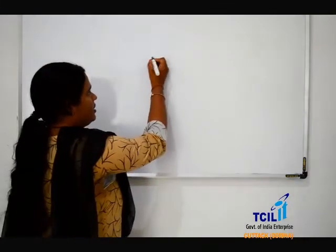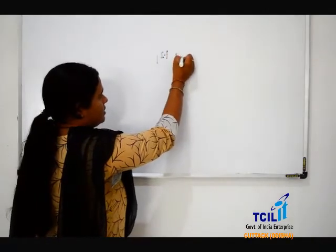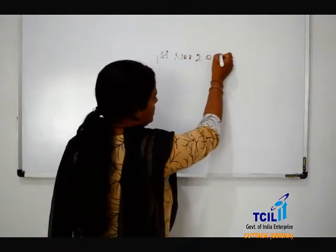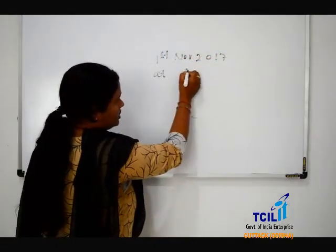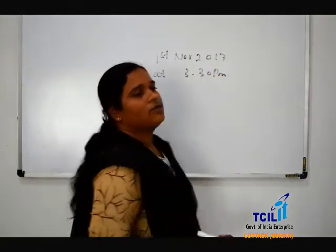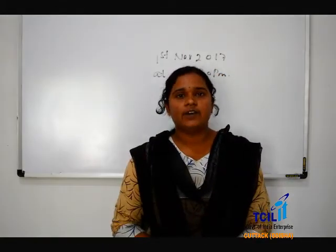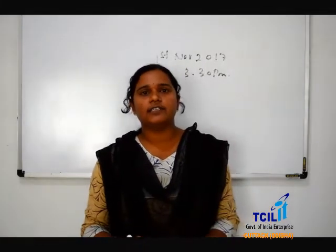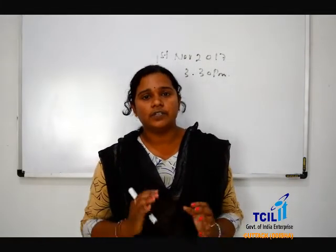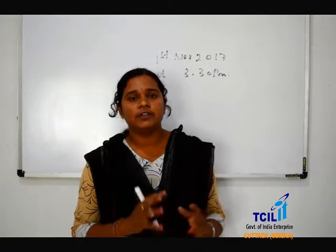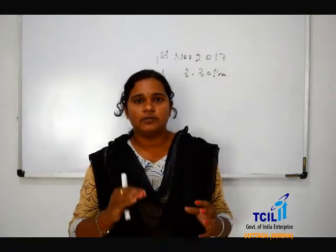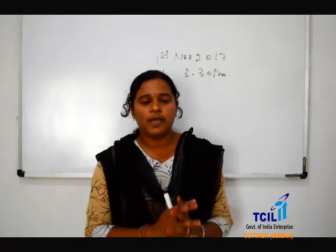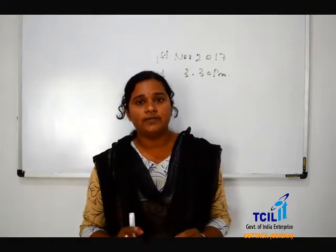Recently a mishap happened at NTPC Munchahar. On 1st November 2017, at around 3:30 PM, an abnormal siren was heard and everybody was alerted. After checking, it was recognized that a blast had occurred on the pipeline of the boiler at the 500 megawatt unit 6 of NTPC.